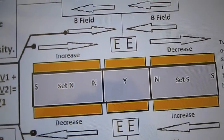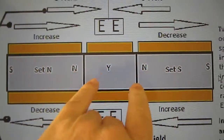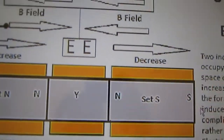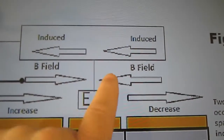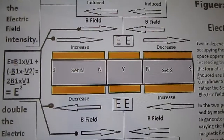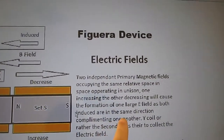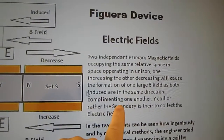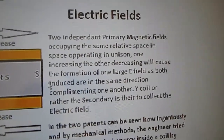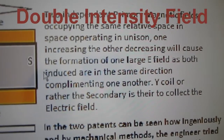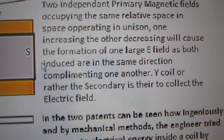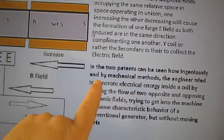You can't achieve that with a north-south face magnet — it will not happen because the induced fields are in two different directions and the B-fields are in the same direction, causing them to snap together. With the north-north setup, you catch the back side of the spin of one while decreasing, causing the reverse E-field — both are together. Two independent primary magnetic fields occupying the same relative space, one increasing while the other decreases, will cause the formation of one large E-field as both inductances are in the same direction.